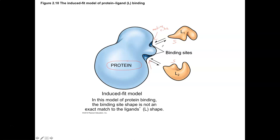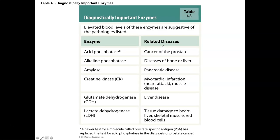Most enzymes are protein-based — typically large proteins. There are some examples of RNA enzymes, but for the most part we talk about protein-based enzymes when discussing human physiology. When talking about enzymes, it's important to think about the ideas of specificity, competition, and saturation.